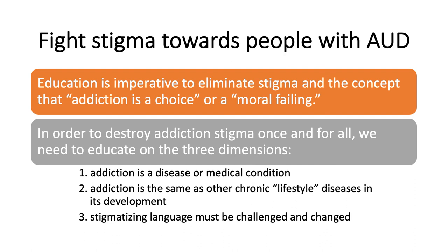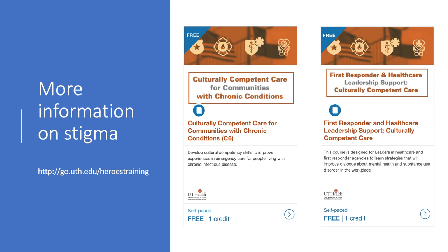Flo Hillard writes about her own AUD recovery, stating: 'The powerful story of what happens in the brain as addiction develops and how that creates the oftentimes illogical and negative behavior of those with substance use disorders is imperative to eliminate stigma and the concept that addiction is a choice or a moral failing.' Hillard continues that in order to destroy addiction stigma, we need to educate on three dimensions: addiction is a disease or medical condition; addiction is the same as other chronic lifestyle diseases in its development; and stigmatizing language must be challenged and changed.